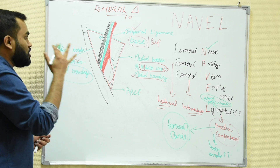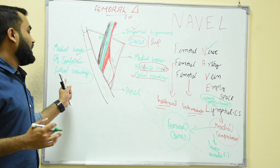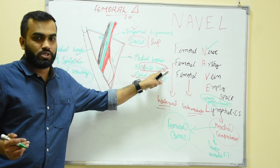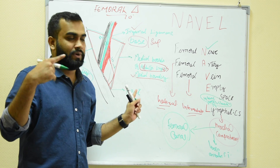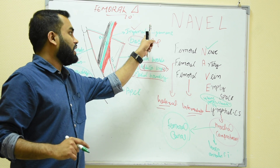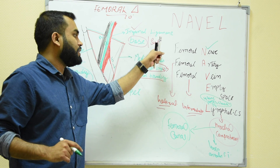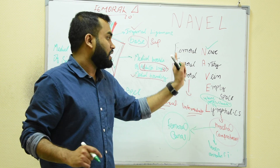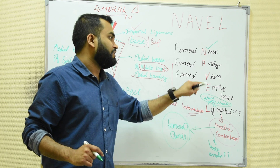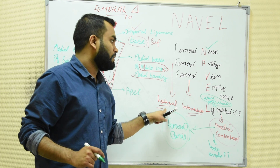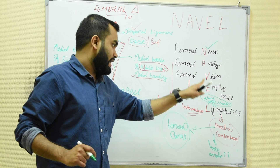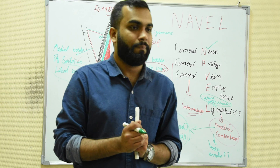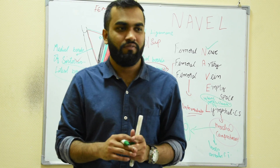To summarize: the boundaries of the femoral triangle — lateral boundary is sartorius, medial boundary is adductor longus, and the inguinal ligament forms the base or superior part. Contents — remember NAVEL: N for femoral nerve, A for artery, V for vein, E for empty space, L for lymphatics. Artery is in the lateral compartment, vein in the intermediate compartment, and lymphatics in the medial compartment, which is also called the femoral canal.